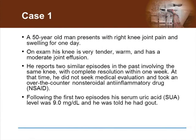Let's consider a 50-year-old man who presents with right knee joint pain and swelling for one day. On exam, his knee is very tender, warm, and has a moderate joint effusion. He reports two similar episodes in the past involving the same knee with complete resolution within one week. At that time, he did not seek medical evaluation and took an over-the-counter non-steroidal anti-inflammatory drug. Following the first two episodes, he was told that his serum uric acid level was 9 mg per deciliter, and that's why he was told he had gout.